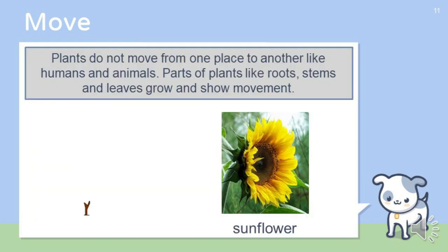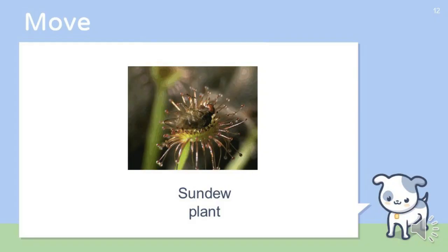Plants do not move from one place to another like humans and animals. Parts of plants like roots, stems and leaves grow and show movements. There are some special plants which show specific movements. For example, the sunflower always faces the sunlight. Leaves of the sundew plant close when an insect is trapped in it.